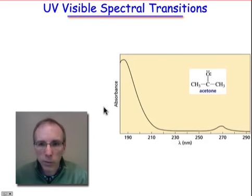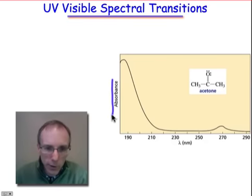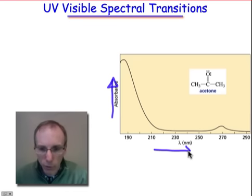Let's study the absorption spectrum for a typical molecule like acetone. We're plotting the amount of light that's absorbed as a function of wavelength. We see that there are two absorbances, a strong one at about 190 nanometers and a weaker absorbance at about 270 nanometers.